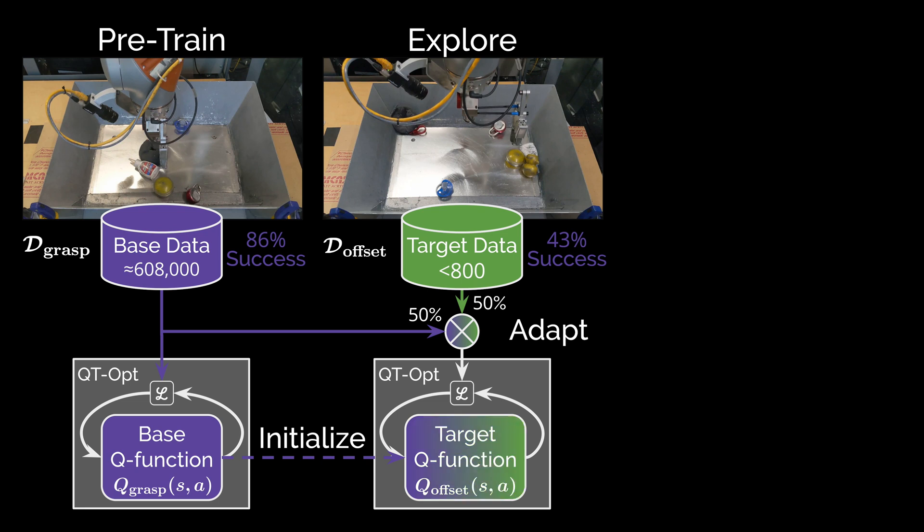We execute this update process for some number of gradient steps. In this study, we always use 500,000 steps. At the conclusion of this process, we arrive at a Q function adapted to the new task variation we explored earlier.